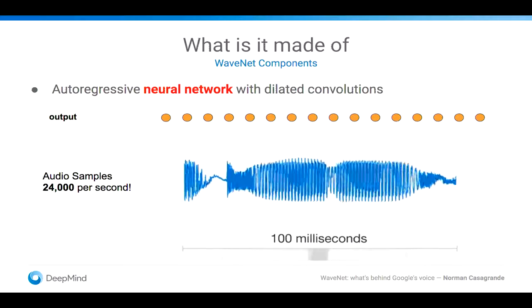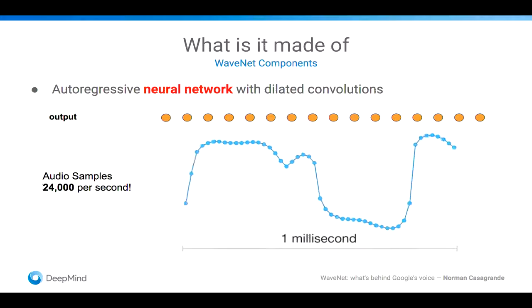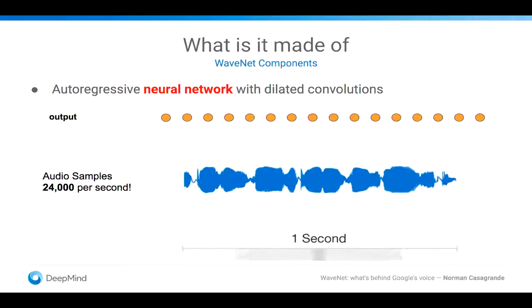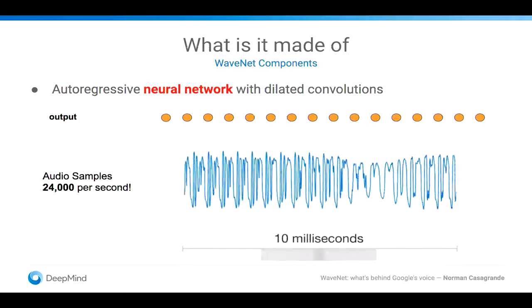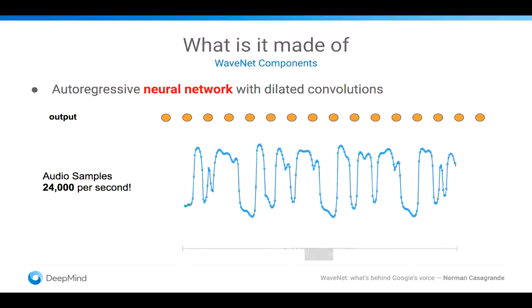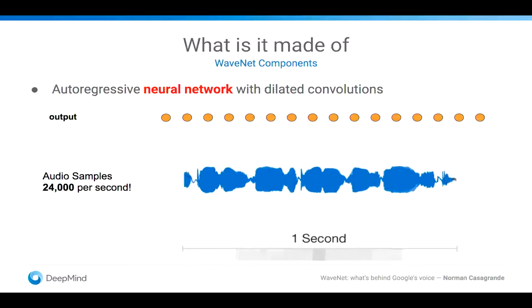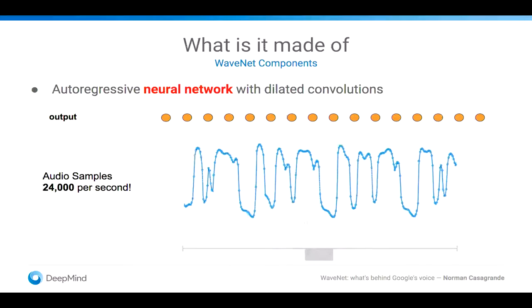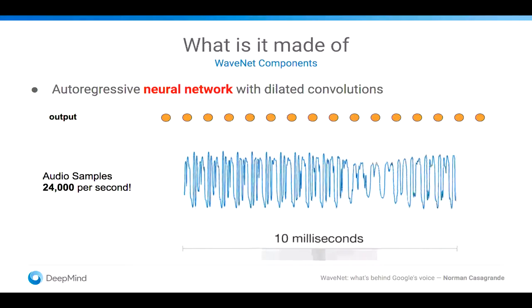This is really part of what made WaveNet so revolutionary. We're trying to model the samples themselves. And the samples are those values that exist in the representation of the audio, which is this waveform. I have this animation here that shows how we have for a good quality audio, about 24,000 of them per second. So you need a model that is able to predict 24,000 of those tiny little samples per second, in a way that makes it sound natural.